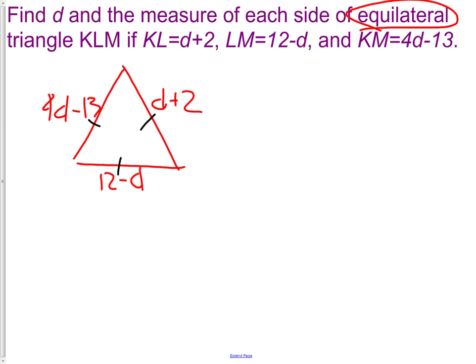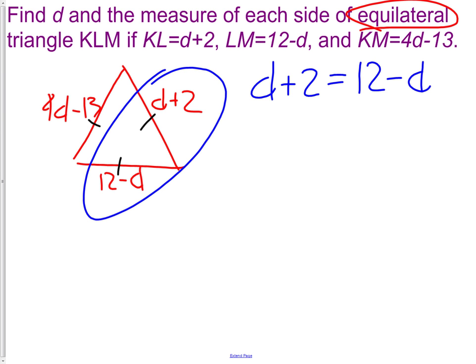But we can't solve a problem in which we set three things equal to each other. So I'm going to pick just two. And it can be any two. I will take these two sides. I will put d+2 equal to 12-d.